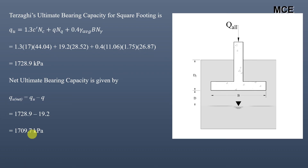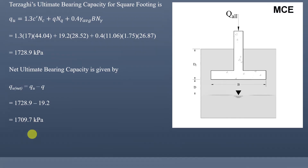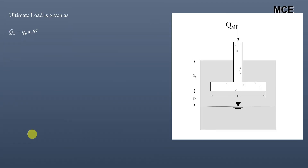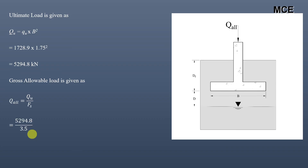Now we find the loads. The ultimate load equals the ultimate bearing capacity multiplied by the cross-sectional area of the footing: qu × B² = 1728.9 × 1.75² = 5294.8 kN. The gross allowable load equals the ultimate load divided by the factor of safety: 5294.8 ÷ 3.5 = 1513 kN.